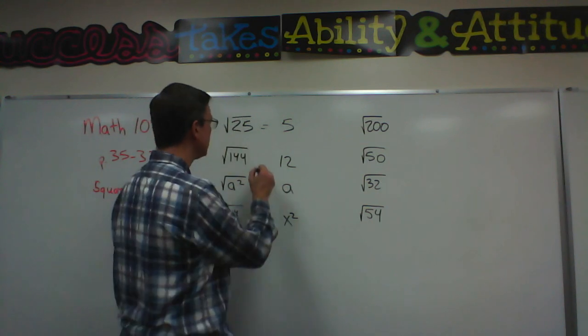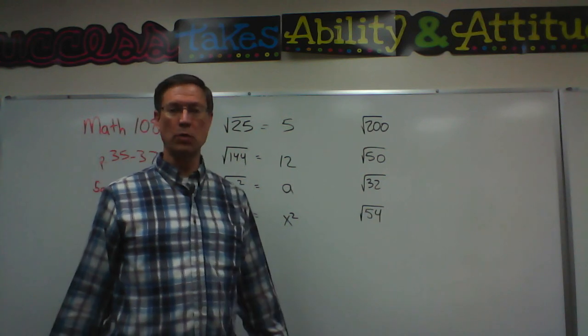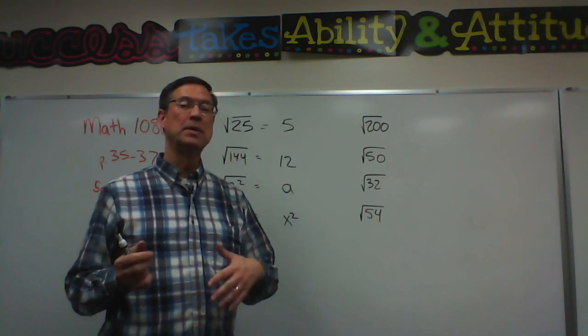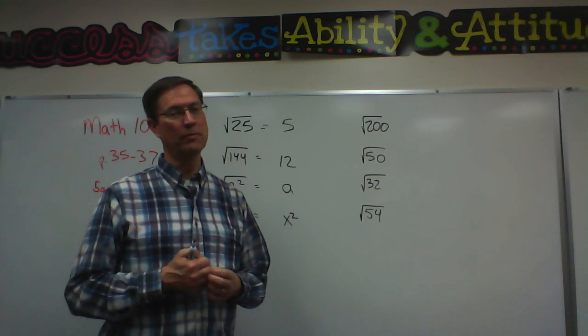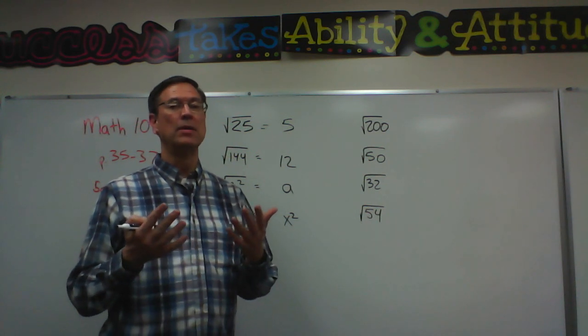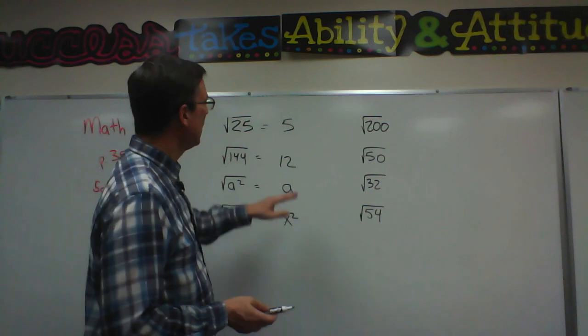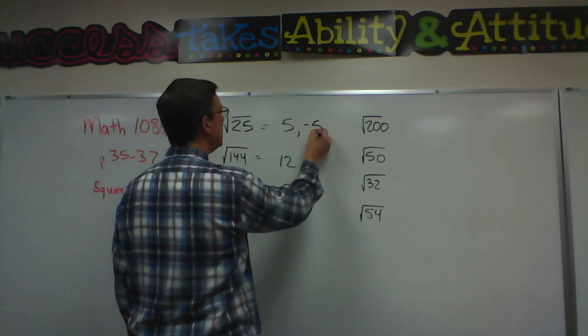Now we actually are not done because 5 times 5 equals 25, but did you think of this? Negative 5 times negative 5 would also be 25. As long as if they're both positive or they're both negative, the negatives would cancel and you'd have positive 25. So we actually have two answers: positive 5 and negative 5.